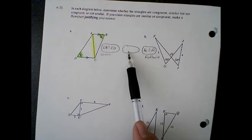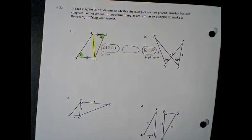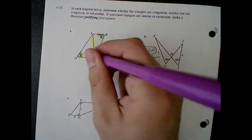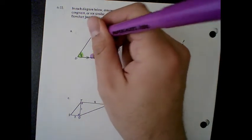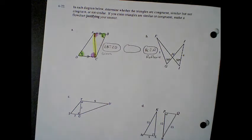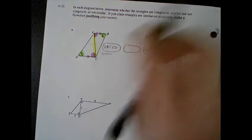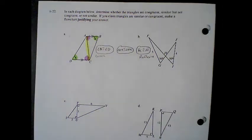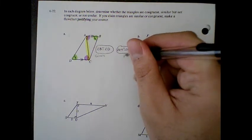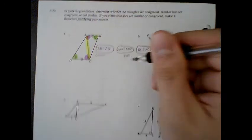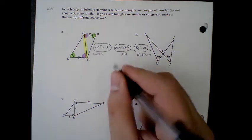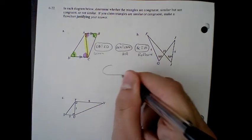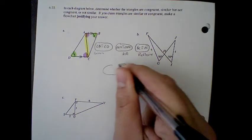And the last thing we need is the last angle. I know that angle DCA is congruent to CAB. How do I know those two are congruent? I know they are congruent because they are alternate interior angles, AIA. So I can write my justification.